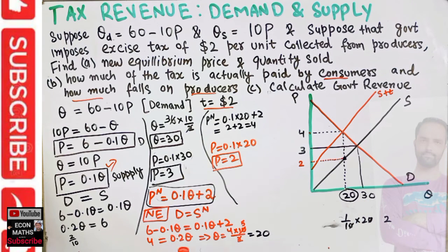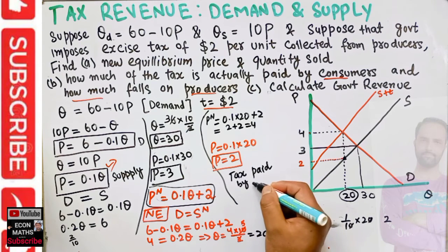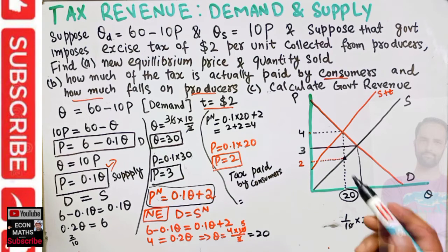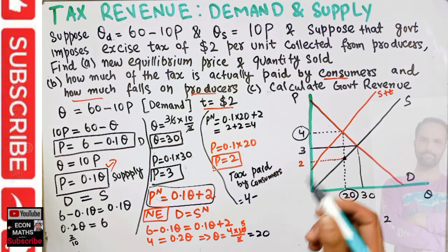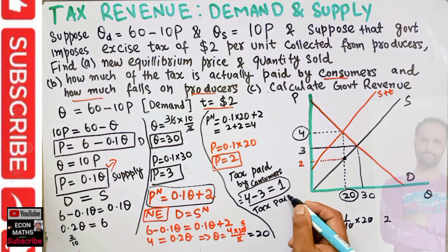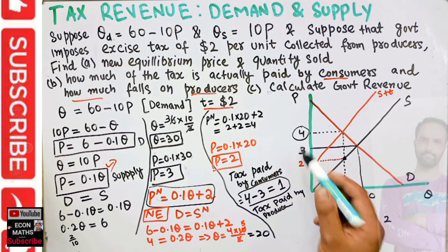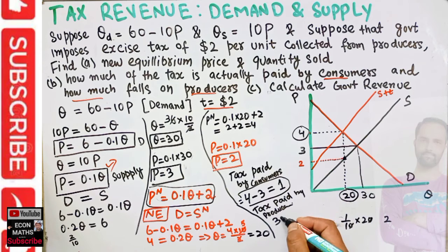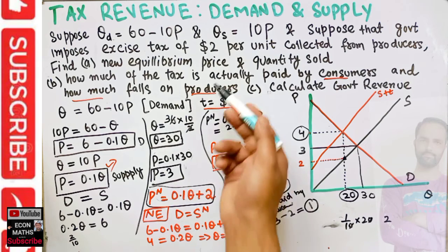The tax paid by consumers equals the new price they pay (4) minus the original equilibrium price (3), which is one dollar. The tax paid by producers equals the original equilibrium price (3) minus the price they now receive (2), which is also one dollar.